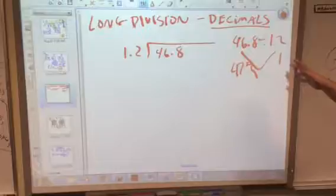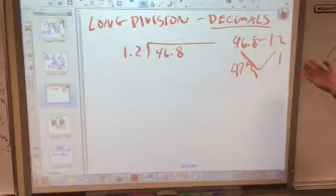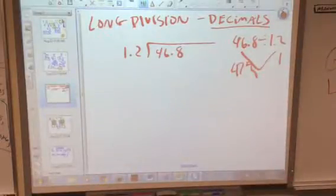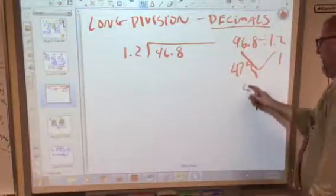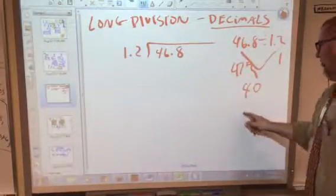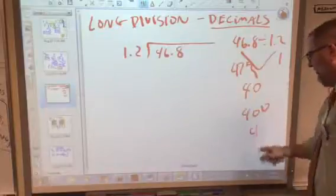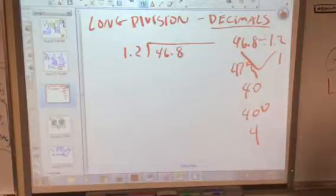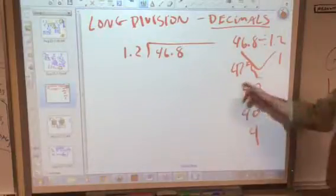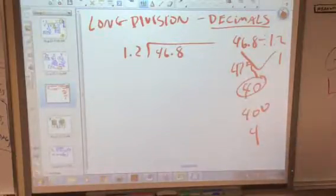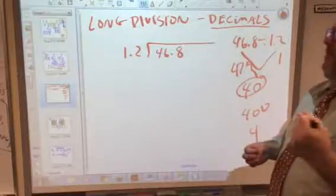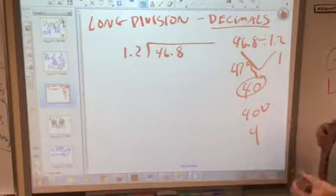But the important part is to know, let's say you even say it's going to go in about 40 times. That way when you have your decimals and you have 40 or 400 or 4 as your possible answer and you lose track of your decimal, that way you can see it should be closer to 40, not 400.